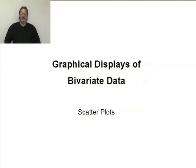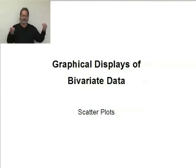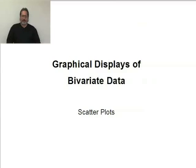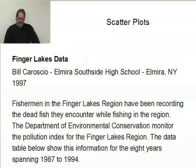We've been looking at univariate displays of data and I want to jump briefly to the idea of bivariate data and scatter plots. Bivariate data simply means we're going to take two measures from the same object, like somebody's height and their weight, and we want to do some type of graphical display with that data. Let's take a look at the Finger Lakes data.